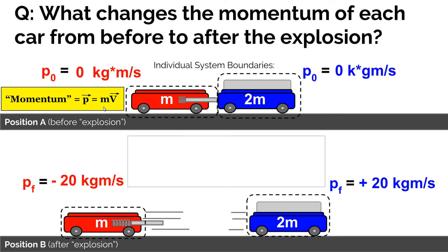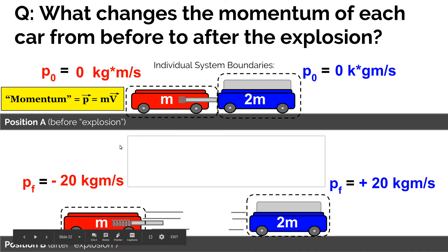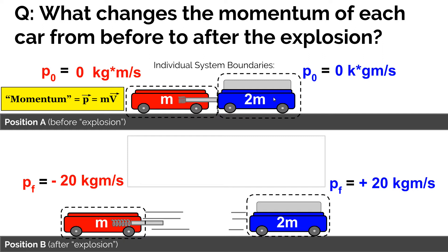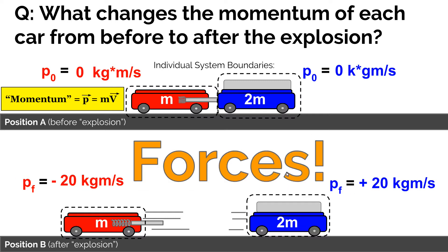If we consider each cart individually as its own system, the blue cart goes from some initial momentum to some final positive momentum, and the red cart goes from zero initial momentum to some final momentum. The red cart changes its momentum by negative twenty kilogram meters per second, and the blue cart changes its momentum by positive twenty kilogram meters per second. What changed each cart's momentum? What causes an object to go from zero momentum to some momentum must be explained by forces.